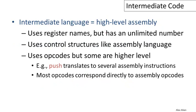The kind of intermediate language we're going to look at is going to be a high-level assembly. As suggested, this language is going to use register names, but it will have an unlimited number — we can use any number of registers we like, not bound to 32 or 64 registers. The control structures will look a lot like assembly language; in particular, there will be explicit jumps and labels on instructions.